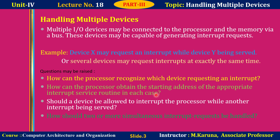Each device has its own ISR (Interrupt Service Routine), and each ISR has its own address. How can the processor obtain the starting address of the appropriate interrupt service routine? Next question: should a device be allowed to interrupt the processor while another interrupt is being serviced? How should two or more simultaneous interrupt requests be handled by the processor?